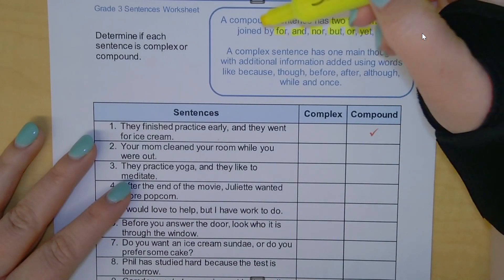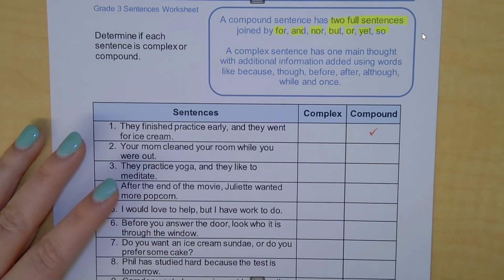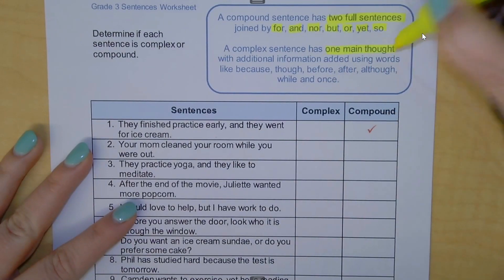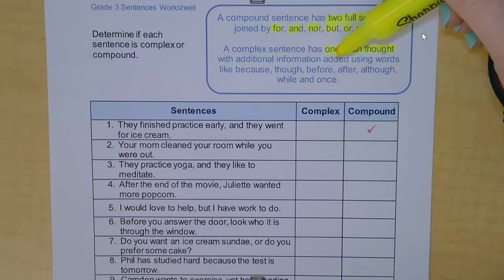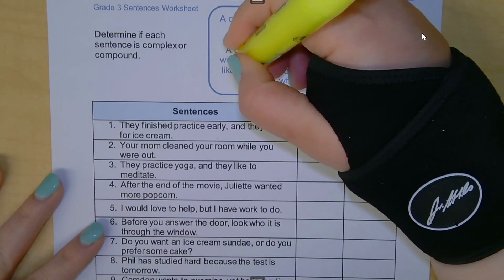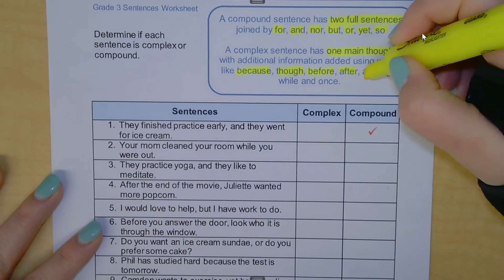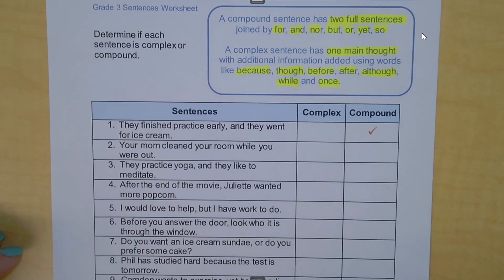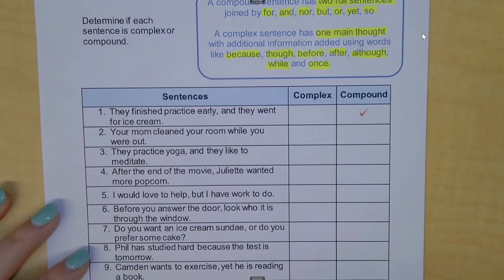You should be able to see your FANBOYS: F-A-N-B-O-Y-S. A complex sentence has one main independent clause — one complete sentence — with additional information added using words like because, though, before, after, although, while, and once. We have our clue words and we are ready to begin.